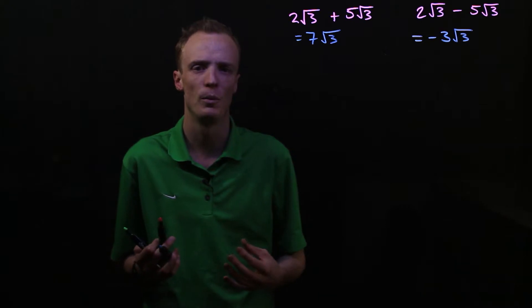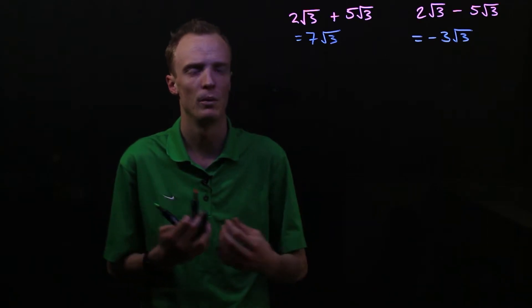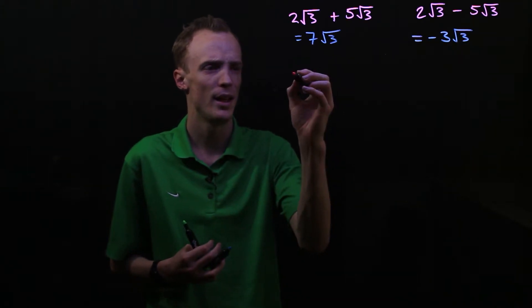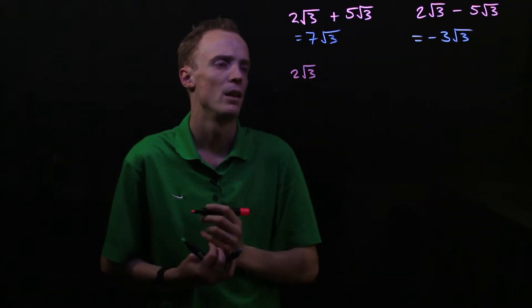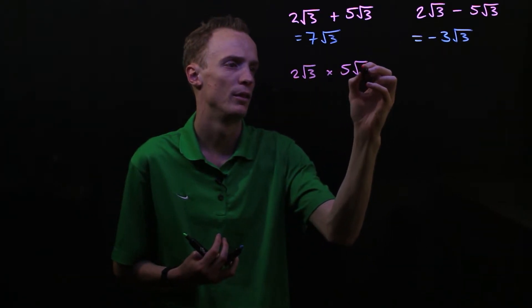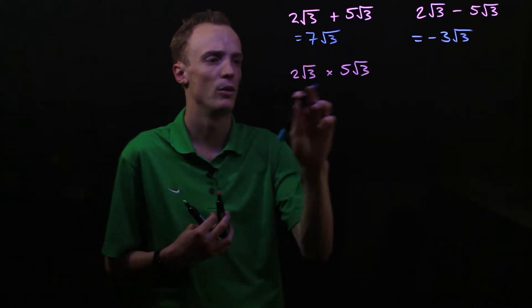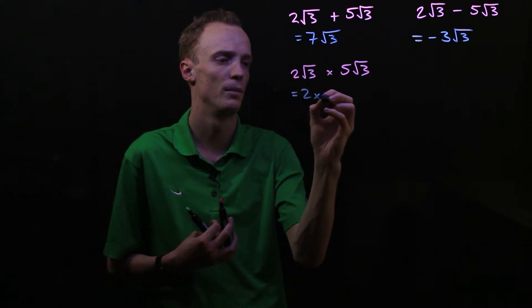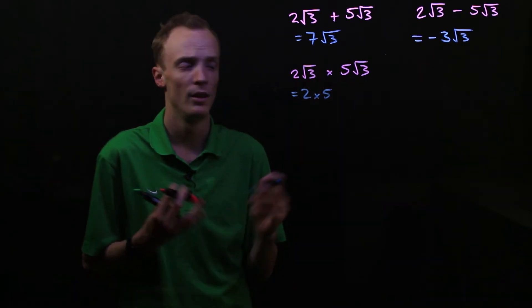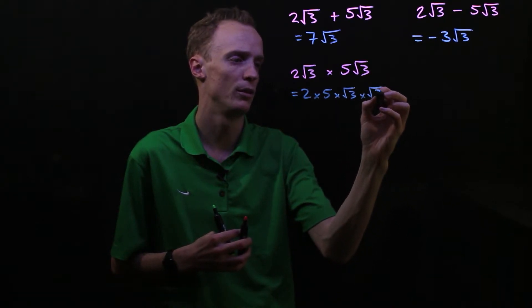Now when we're multiplying terms together that include surds, we use our normal algebraic rules to multiply those terms together. So for example, if I had 2√3 and I was multiplying it with 5√3, what I essentially do here is multiply the coefficients together, so the 2 times the 5, and multiply the surd terms together, so √3 multiplied by √3.